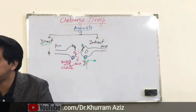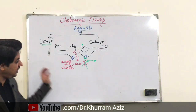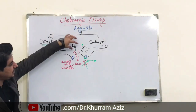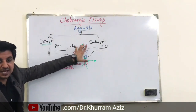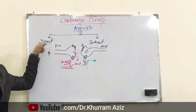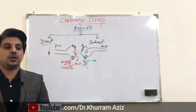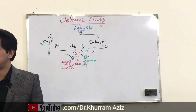Such drugs are called indirect cholinergic agonists. If a drug directly attaches to the receptors, it is named a direct-acting cholinergic agonist.